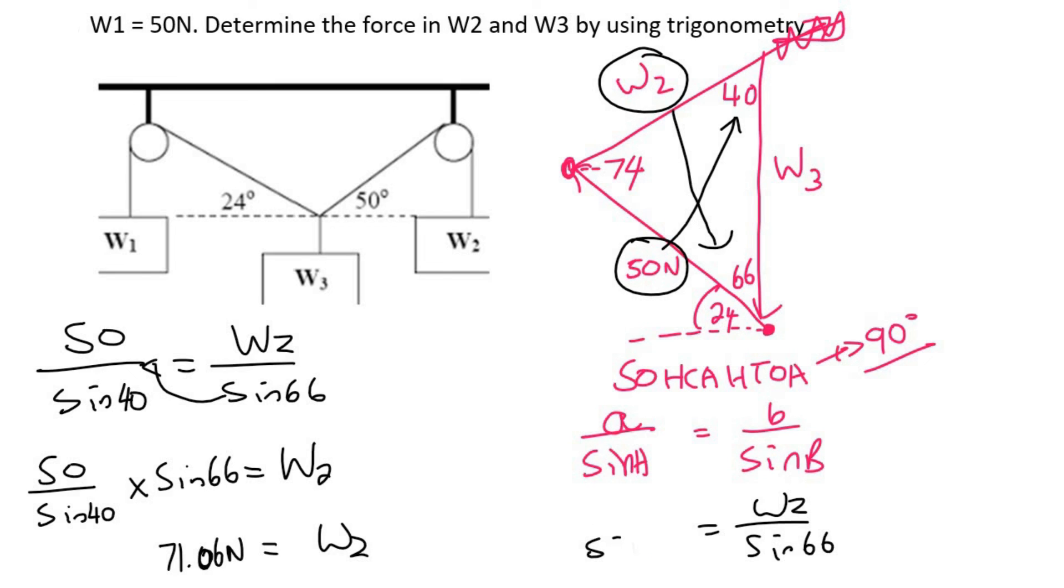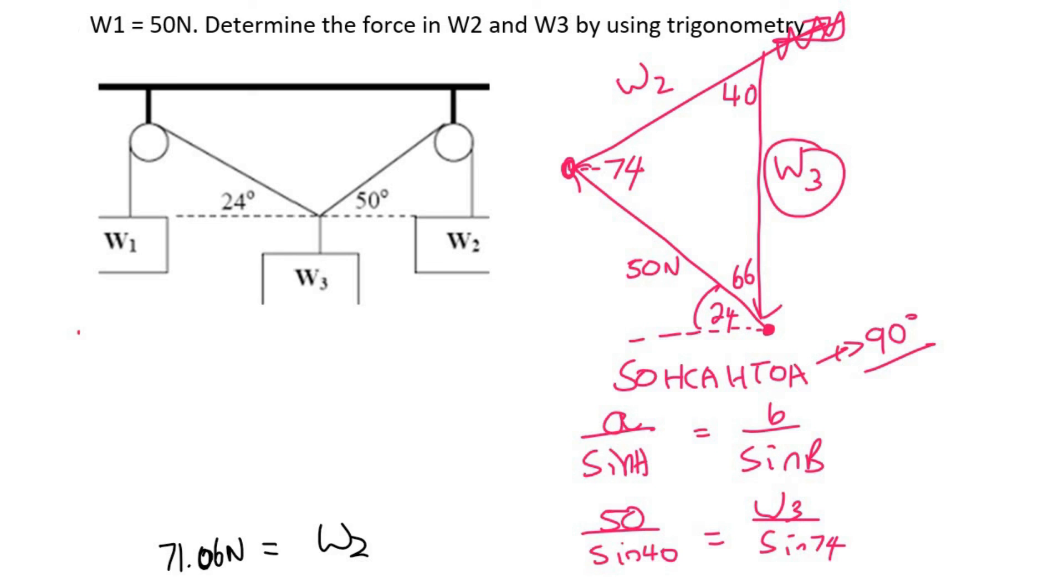Now we just repeat the same process to find W3, and you can use any two sides. So for example I'm going to use 50 again, so we know that that goes with sin of 40, equals to, now this time we're going to take W3 over its angle which is 74, so we say sin 74. So that's 50 over the sin of 40, equals to W3 over the sin of 74. And then if I have to get W3 alone, you would have to multiply the sin 74 across, and so that's going to be 74.78 newtons.